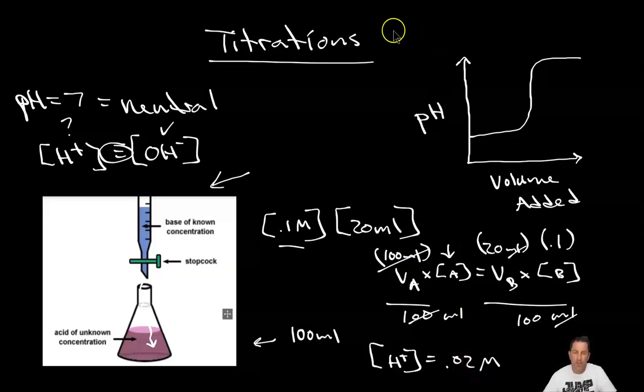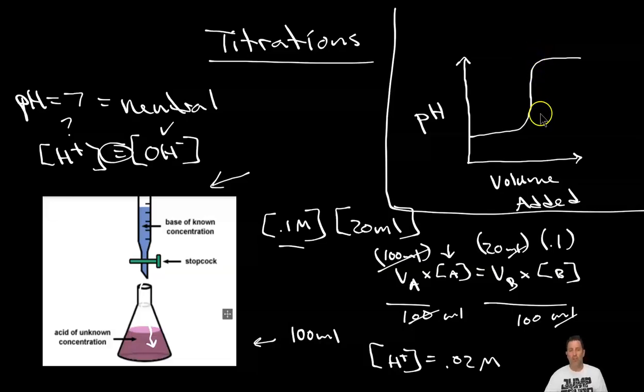Okay now let's talk about this graph right here. This is what we call a titration curve. It shows the pH of the unknown solution as I added base. The pH stays flat mostly until I get to a point where it curves up and then goes almost straight up.